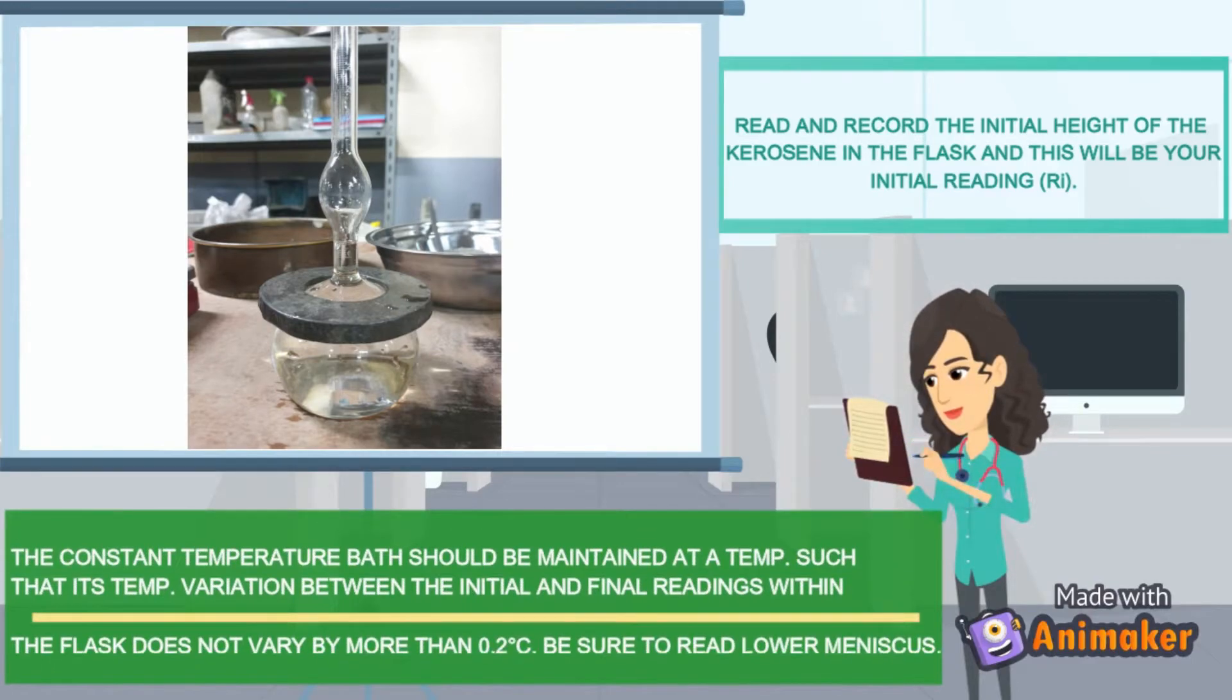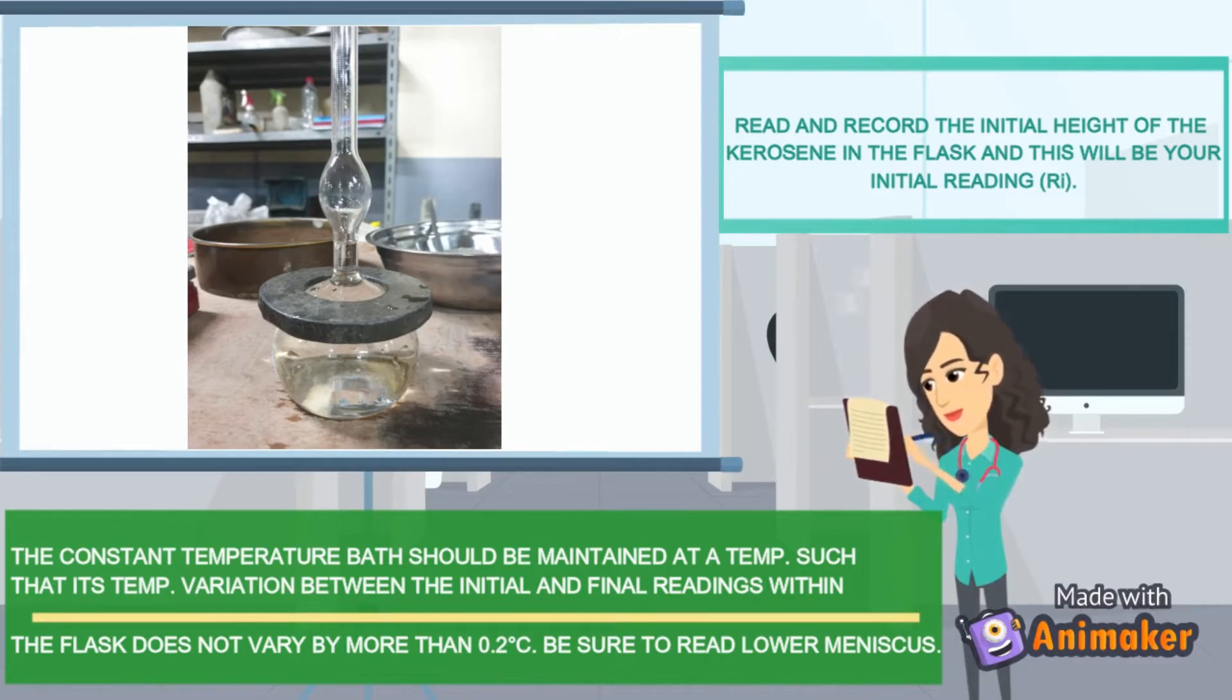The constant temperature bath should be maintained at a temperature such that its variation between the initial and final readings within the flask does not vary by more than 0.2 degrees Celsius.